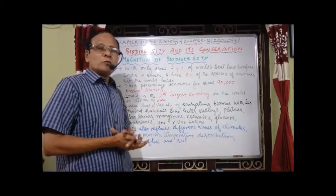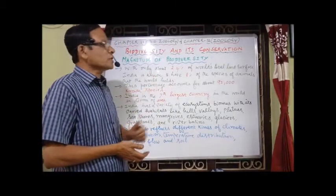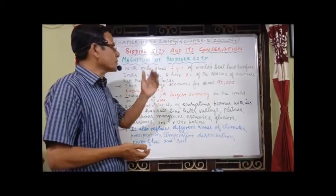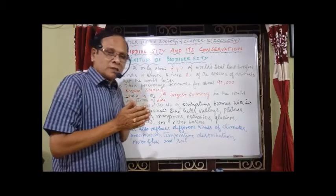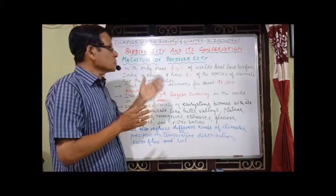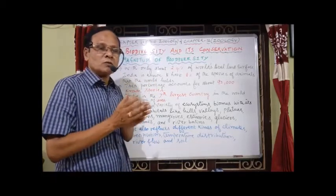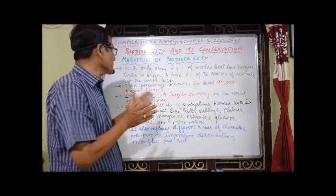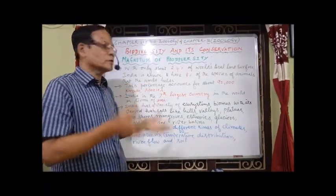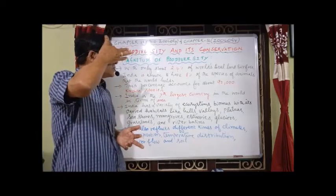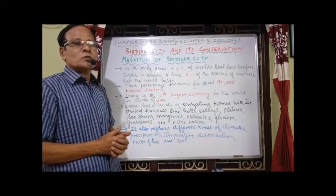With only about 2.4% of the world's total land surface, India is known to have nearly 8% of the world's animal species — about 92,000 known species. India is the seventh largest country in the world in terms of area.